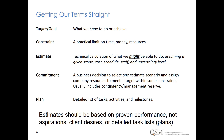The estimate is a technical calculation of what we might be able to do, assuming a given scope, cost, schedule, staff, and uncertainty level. Then we want to enlighten the business so that they can make a decision by selecting one estimate scenario and assign company resources to meet the target within some level of constraint. The plan — the list of tasks, activities, and milestones — comes last.